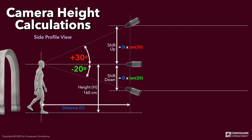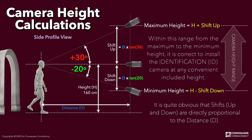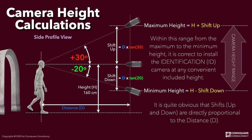The camera can be installed within a range of acceptable height values. The maximum and minimum heights of this range must be calculated. Shifts up and down are directly proportional to the distance, so the acceptable height range is a function of the distance between the camera and the focusing line. Within this range — from maximum to minimum height — the identification camera may be installed at any convenient height. It is preferred to shift upward rather than downward, unless sight conditions or security demands indicate otherwise.